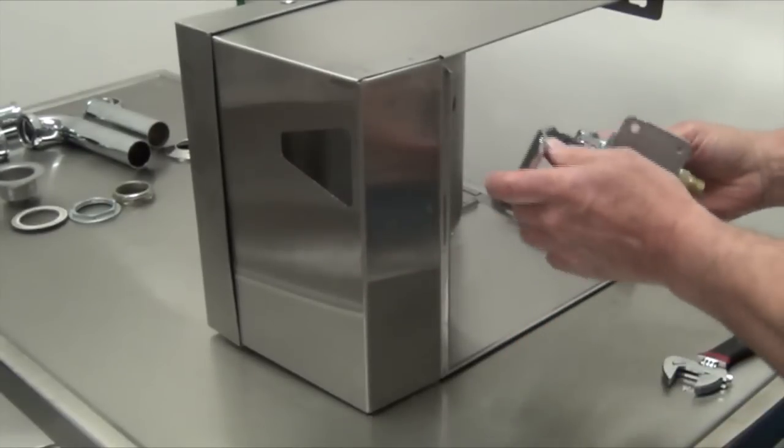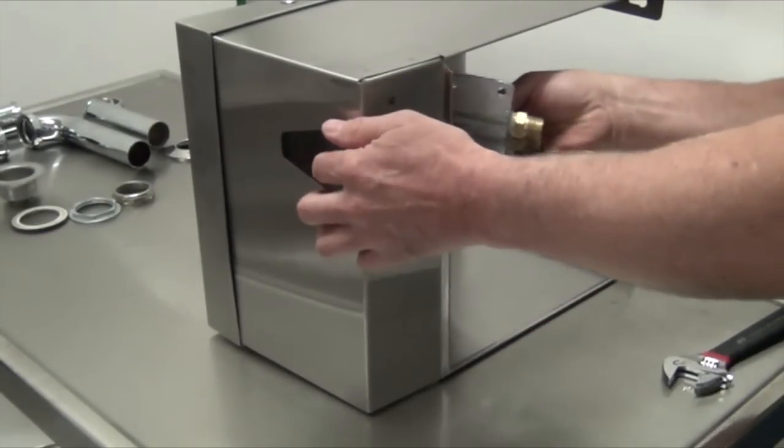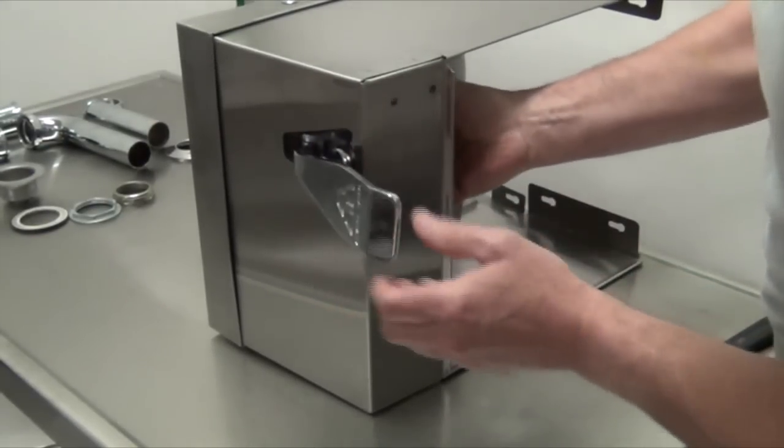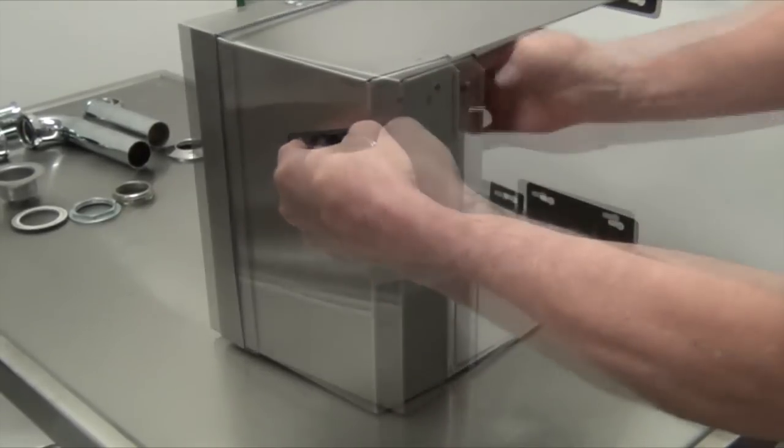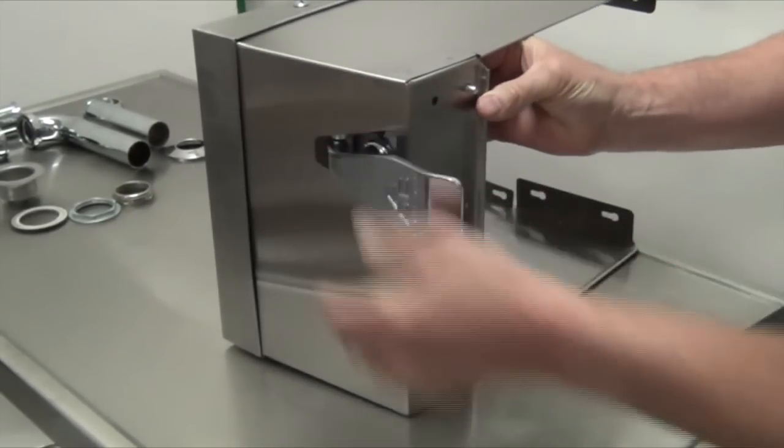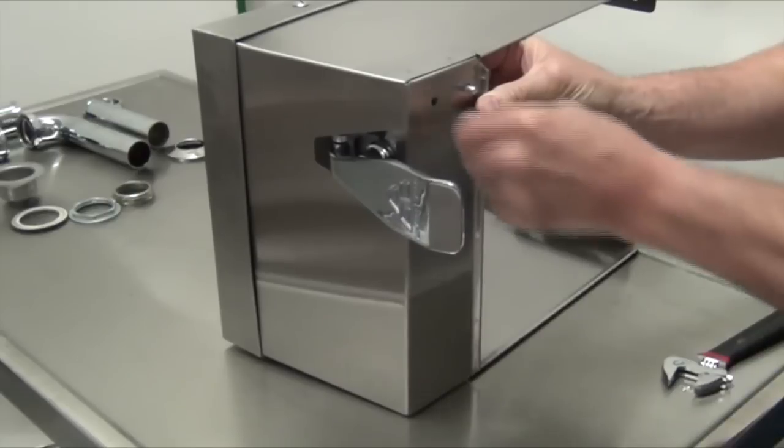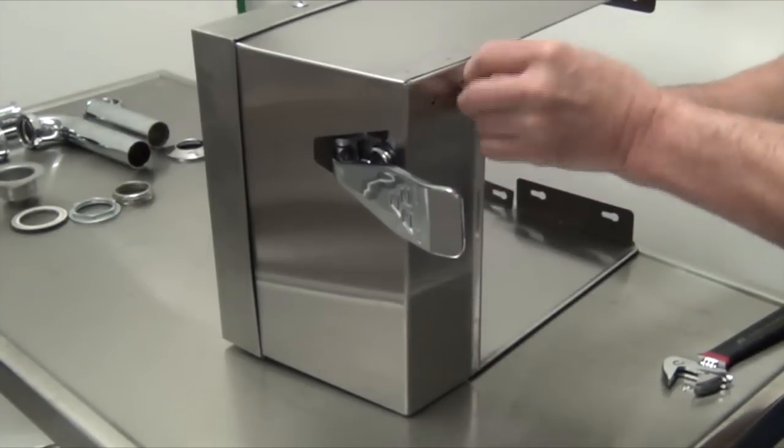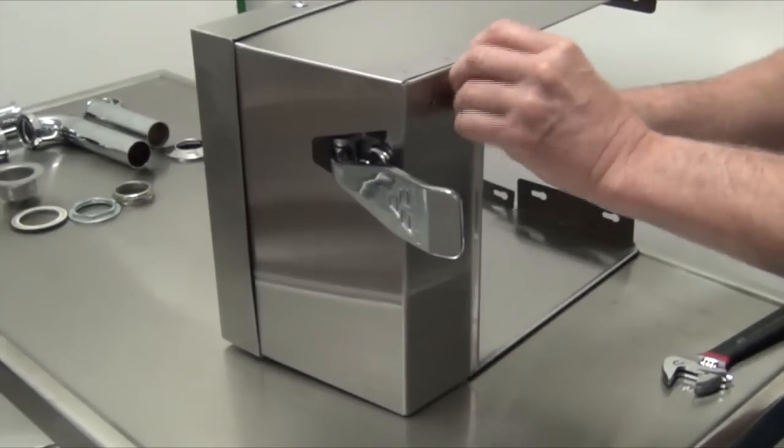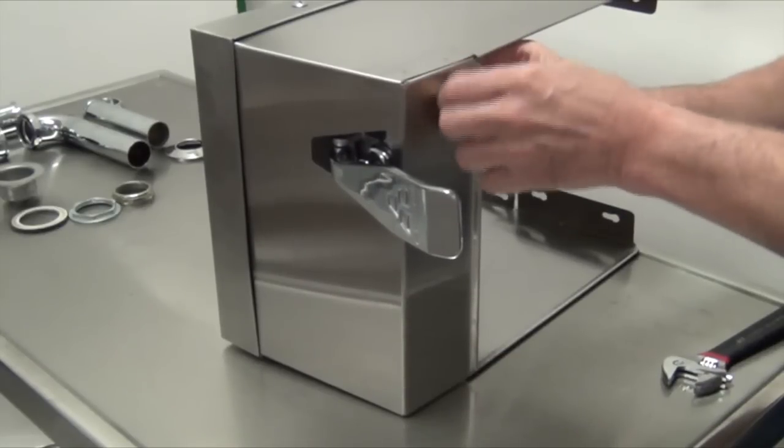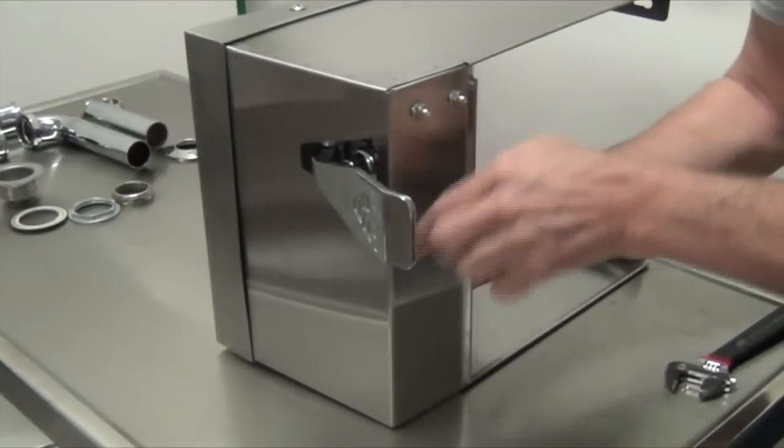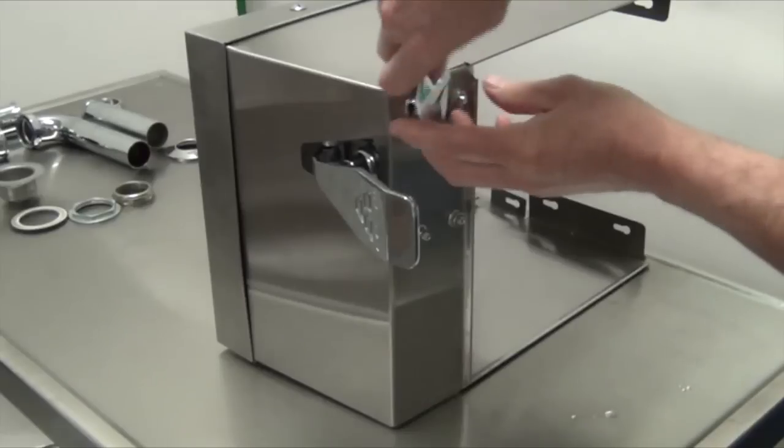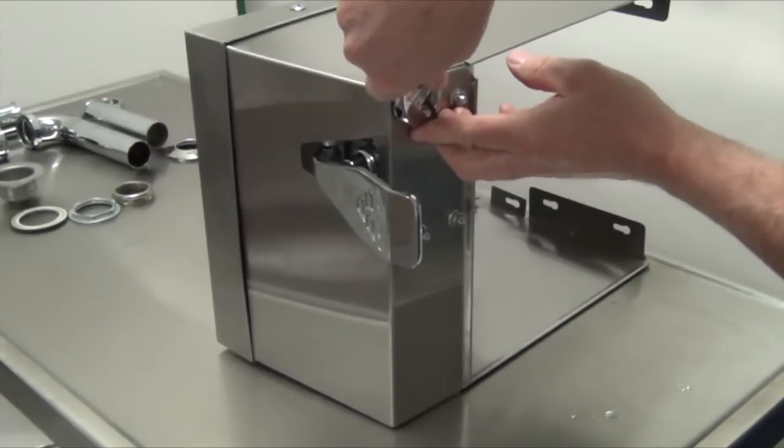It's now time to install the knee valve into the sink. First, insert the knee valve through the opening on the sink as shown. Next, secure the valve on the unit with the nuts and bolts provided. Use a wrench to tighten.